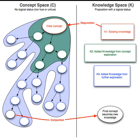A space of concepts C and a space of knowledge K. The process of design is defined as a double expansion of the C and K spaces through the application of four types of operators: C-C, C-K, K-C, and K-K. The first draft of CK theory was sketched by Armand Hatchuel, and then developed by Hatchuel and his colleague Benoit Weil.